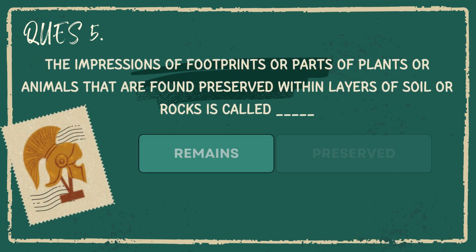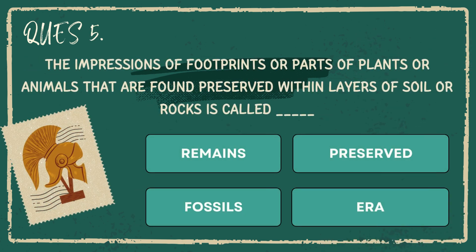The impressions of footprints or parts of plants or animals that are found preserved within layers of soil or rocks is called: remains, preserved, fossils, era.